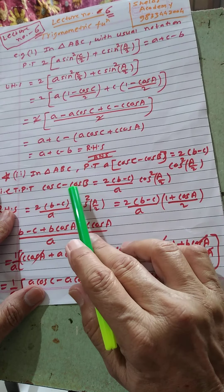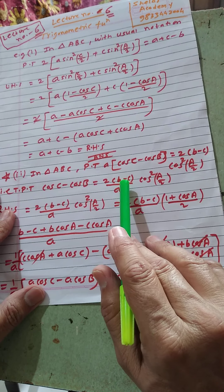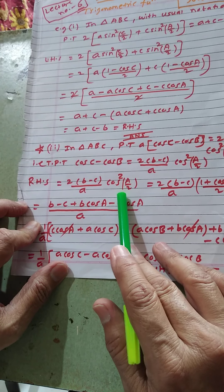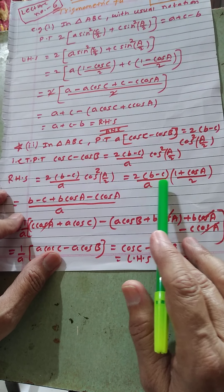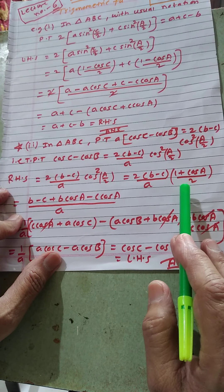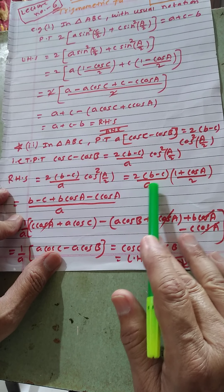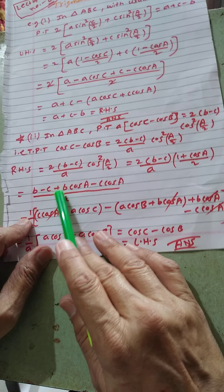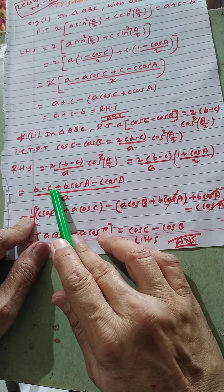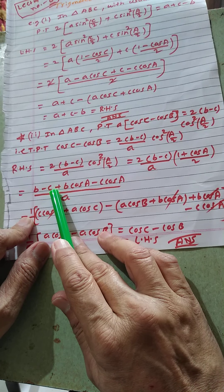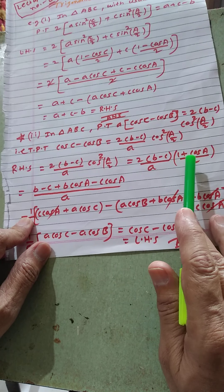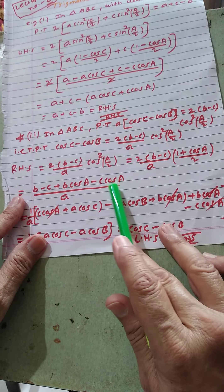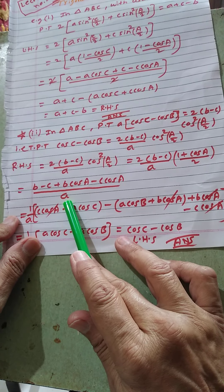RHS is 2(b − c)/a · cos²(A/2). Applying the half-angle formula cos²(A/2) = (1 + cos A)/2, we get 2(b − c)/a · (1 + cos A)/2. Multiplying out: (b − c)(1 + cos A)/a, which expands to (b − c) + (b − c)cos A, giving b cos A − c cos A, divided by a.